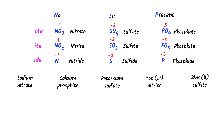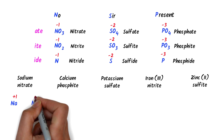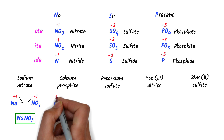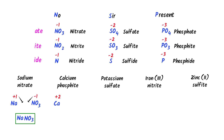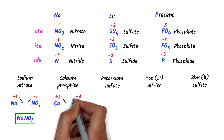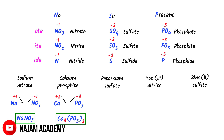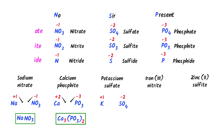Now consider these ionic compounds. In case of sodium nitrite, sodium has charge positive 1 and nitrite has charge negative 1 — I cross and get NaNO₂. In case of calcium phosphite, calcium has oxidation state positive 2 and phosphite has charge negative 3 — I cross and get Ca₃(PO₃)₂. In case of potassium sulfate, potassium has oxidation state positive 1 and sulfate has charge negative 2 — I cross and get K₂SO₄.